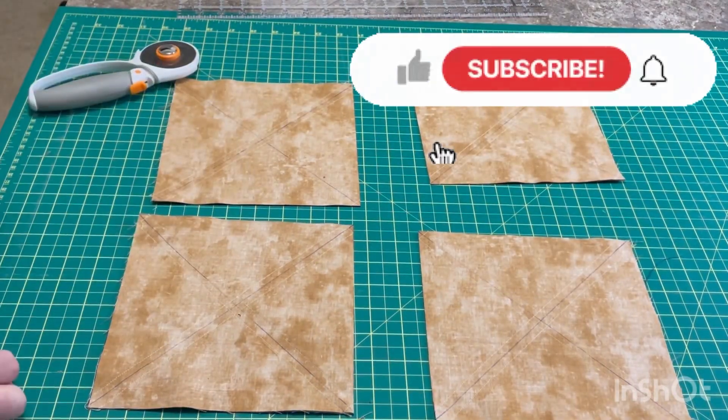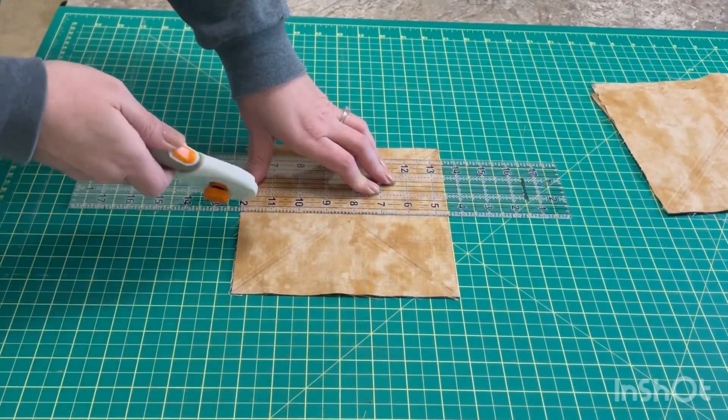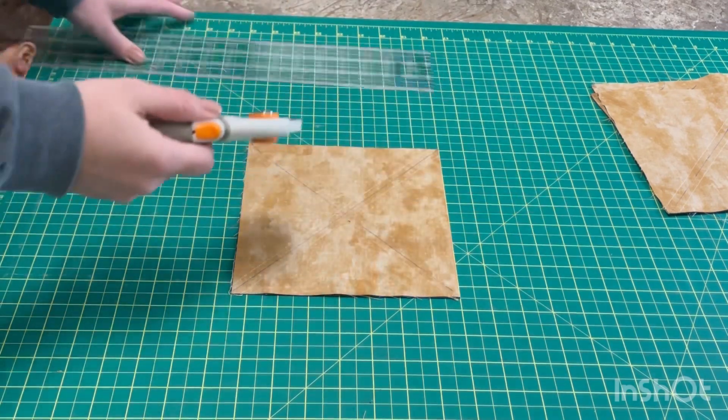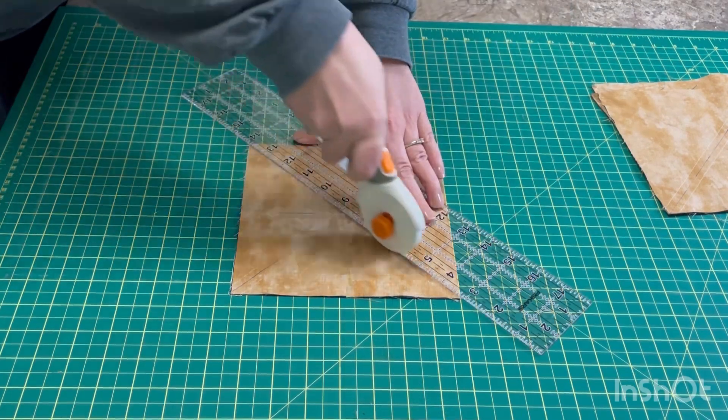Each square will yield eight half square triangles. And then when we're done cutting them all we'll have our 32. So again when it comes to cutting I'm going to start with my straight lines first, going on the vertical and on the horizontal.